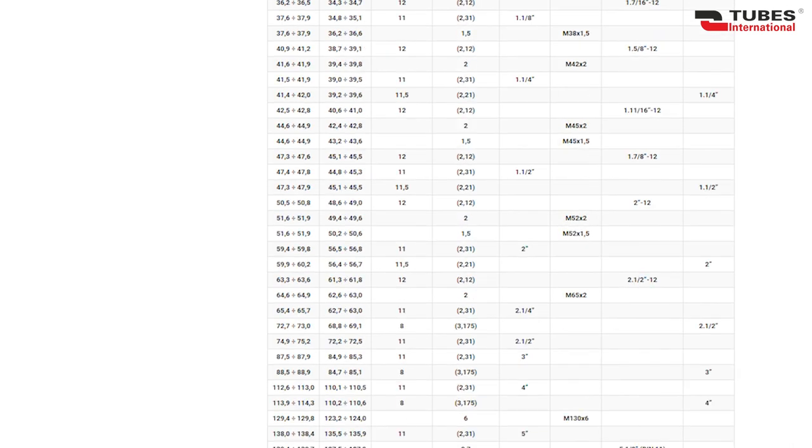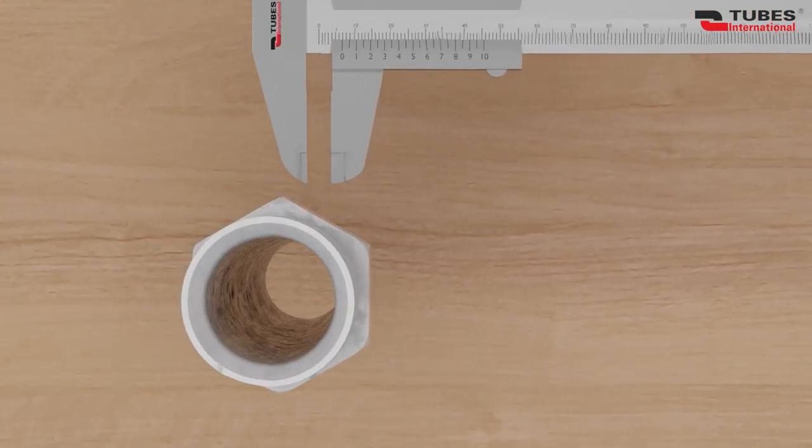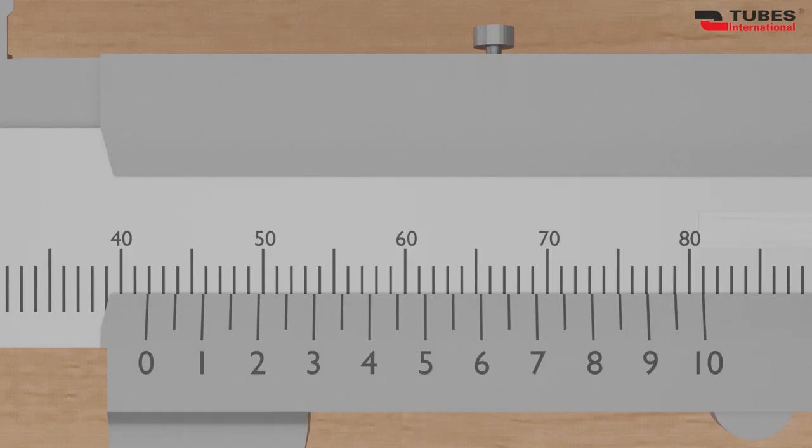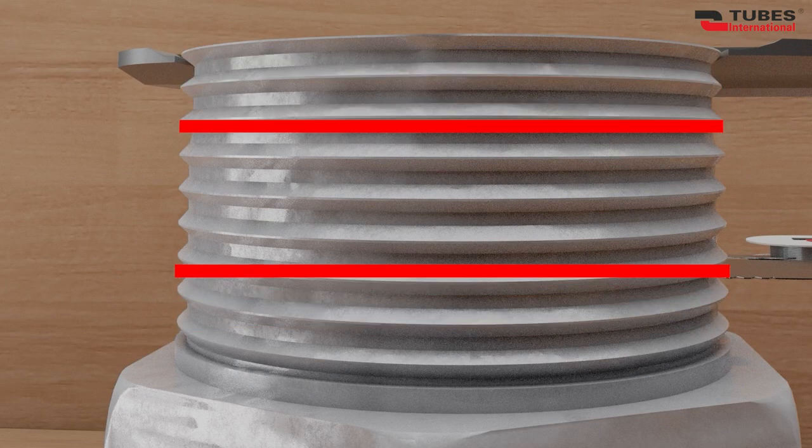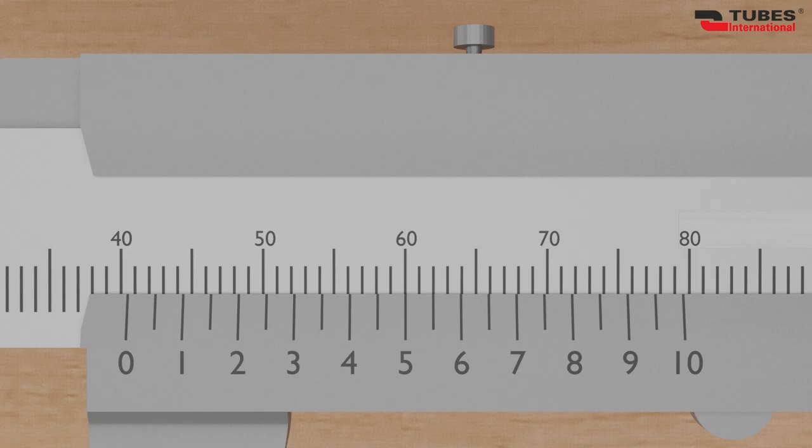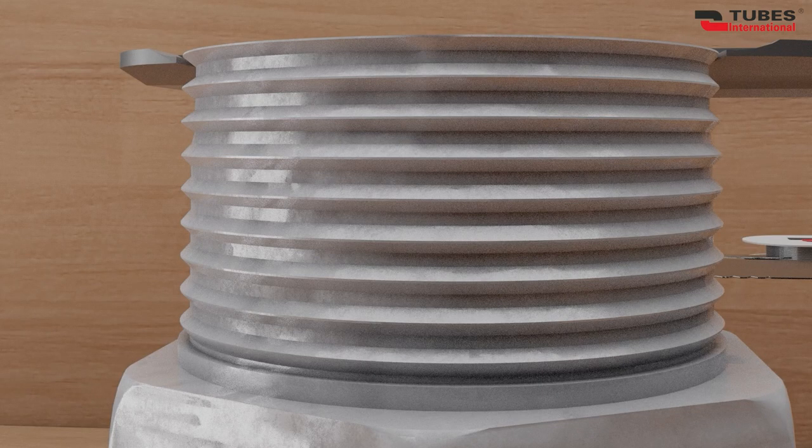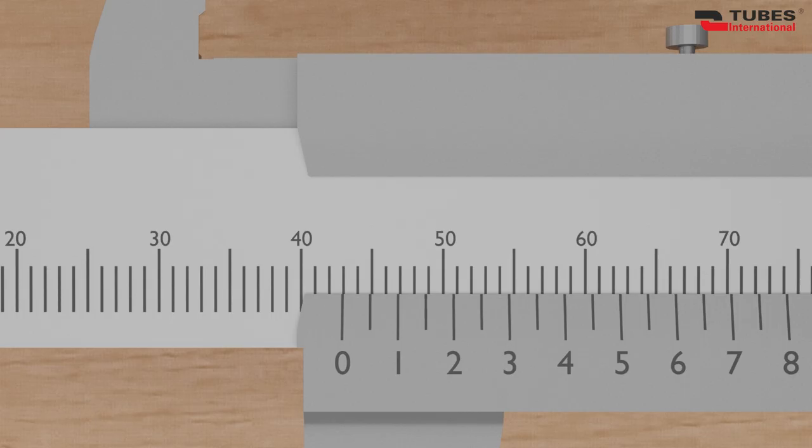To put this into practice, let's check this thread. Start by measuring its diameter at two different points. We can see that the diameter increases, meaning we are dealing with a taper thread. Now we have to measure the diameter at the fourth or fifth turn. It's 41.5 mm.